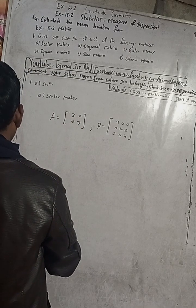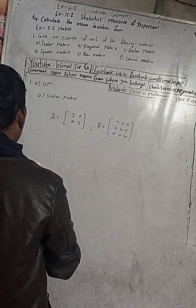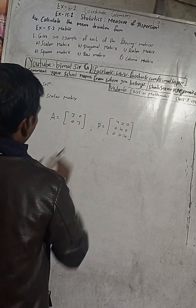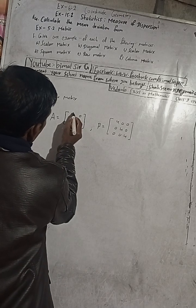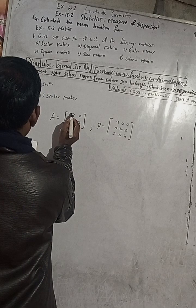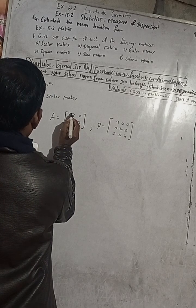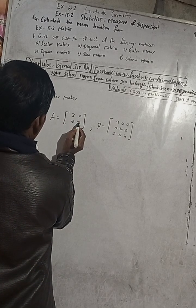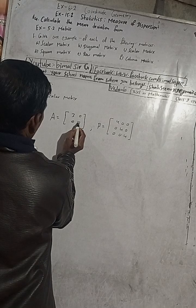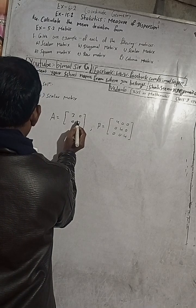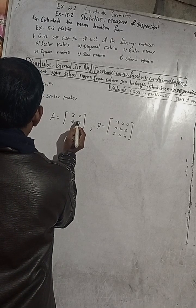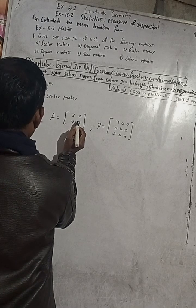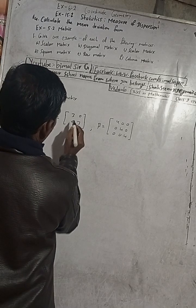A scalar matrix is a matrix in which all the diagonal elements in the leading or principal diagonal are equal. This goes from top left to right bottom — it's called the major diagonal, or principal diagonal, or leading diagonal.